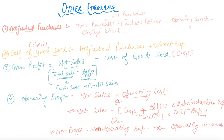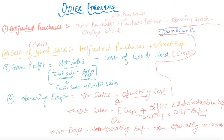Now coming to formulas related to the balance sheet. The fifth formula is Working Capital. Working capital refers to the amount required to spend on day-to-day expenditure. Those day-to-day expenditures incurred by the firm are the working capital requirement. Working Capital equals Current Assets minus Current Liabilities.